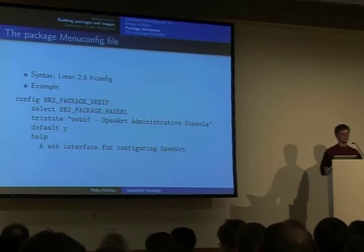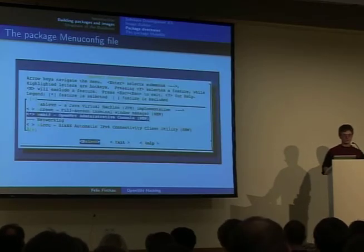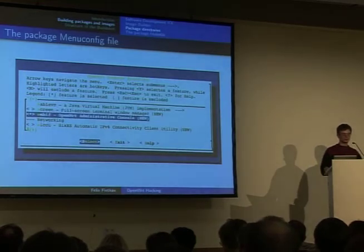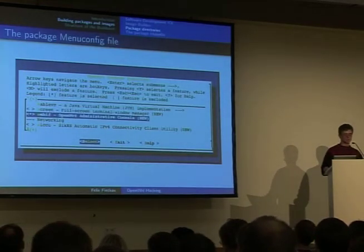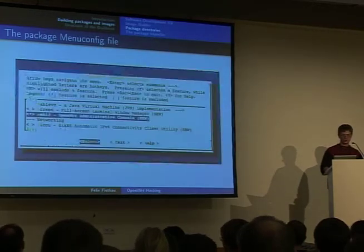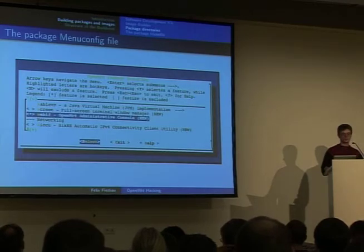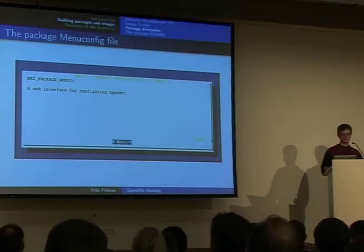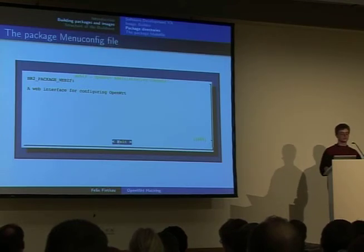Now I'll show you what this looks like. If you open the menu config, you see here the highlighted item is the configuration that I added previously with the name after the tri state command. And if you go on the help text, you will see something like this with the name of the actual config option and the help text.